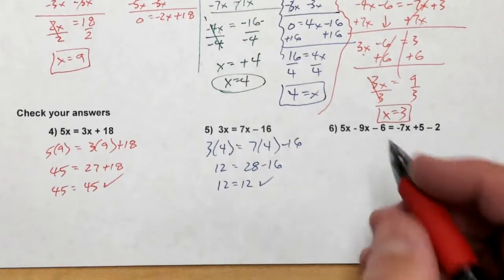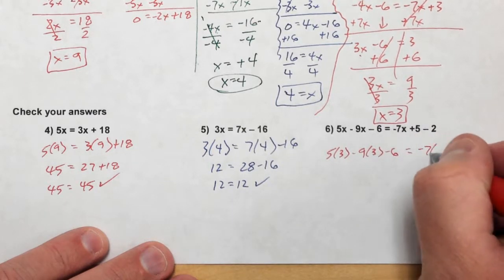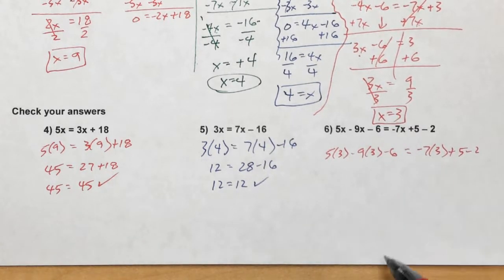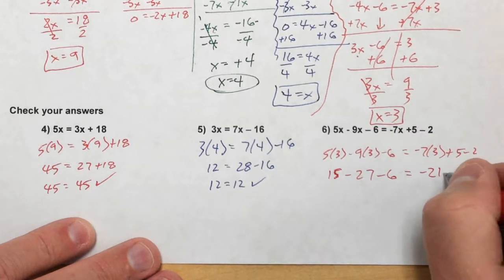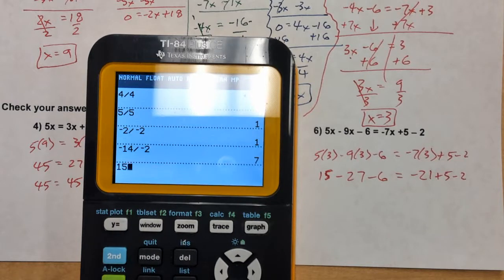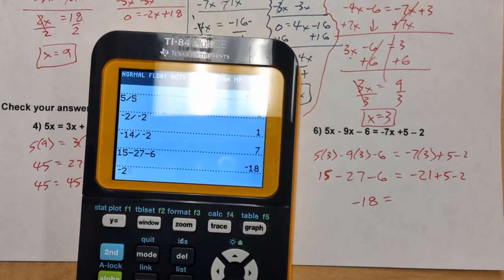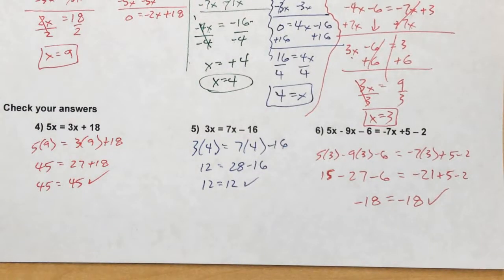Let's check: plug in 3. So 5 times 3 minus 9 times 3 minus 6 equals negative 7 times 3 plus 5 minus 2. That gives 15 minus 27 minus 6 equals negative 21 plus 5 minus 2. Using a calculator: 15 minus 27 minus 6 is negative 18, and negative 21 plus 5 minus 2 is also negative 18. So that checks out — x equals 3. I know this is a long video, but I think a lot of you will appreciate this. If you need more help, just let me know and I can make another video. Have a good day and thank you for watching. Bye-bye.